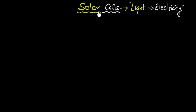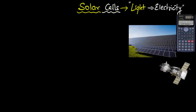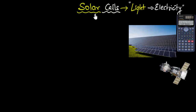we call them solar cells. You probably know where these are used — for example, in calculators. These are the solar cells. You have big solar panels used to generate electricity to power up houses, and you also have solar cells in space probes in outer space. This is one of the best ways to generate electricity there. These panels over here are all containing solar cells, but how do they work?